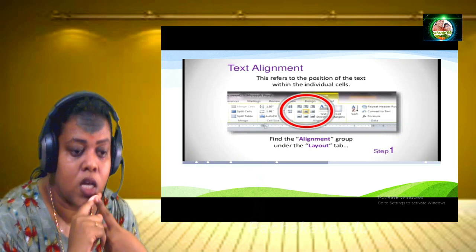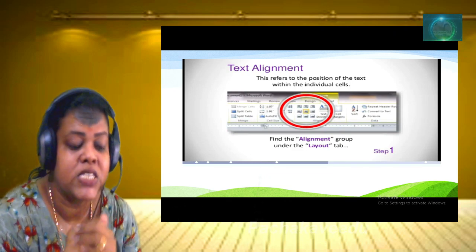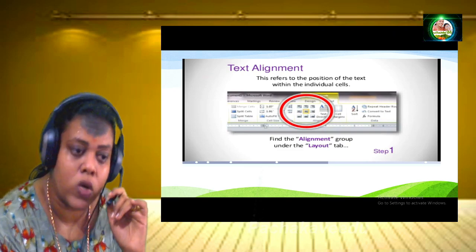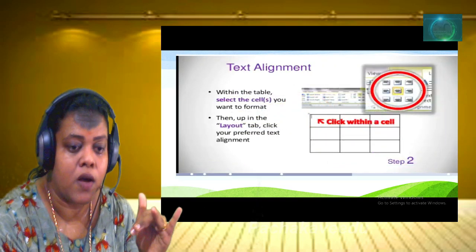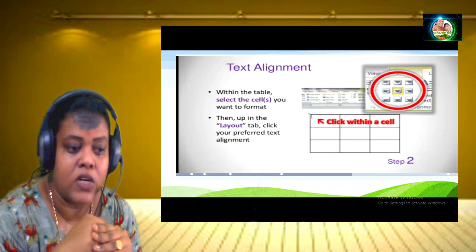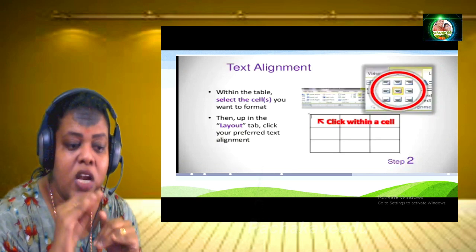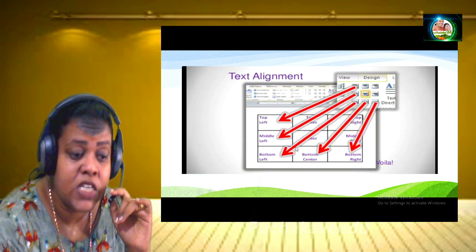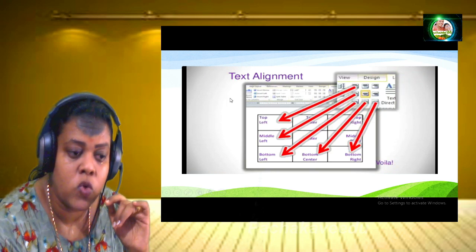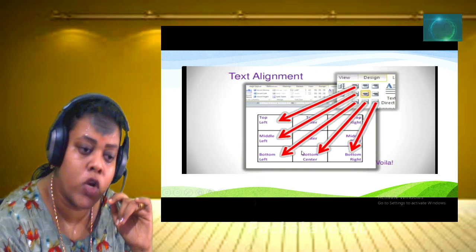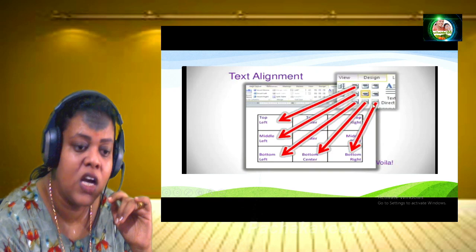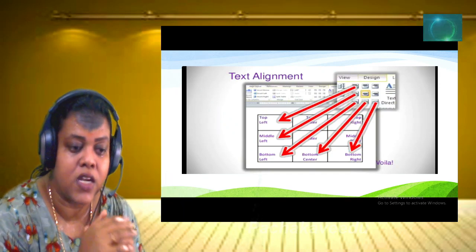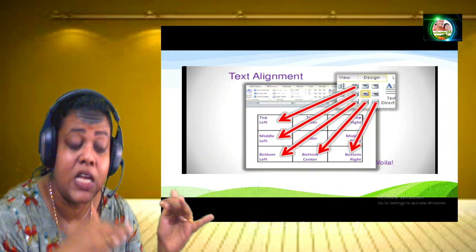We can select the layout table and select a particular portion. Right-click and choose Cell Alignment or Text Alignment. We can select Center, Left, or Right. In this mode, options include Top-Left, Middle-Left, Bottom-Left, Bottom-Center, and Bottom-Right. This is text alignment within a cell.